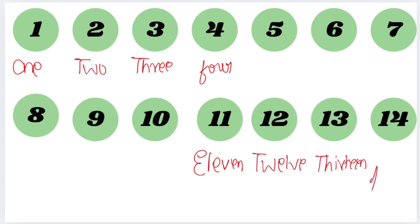And last is 14: F, U, R, T, E, E, N. This is how you should write number names.